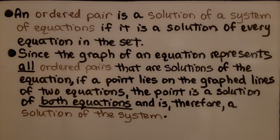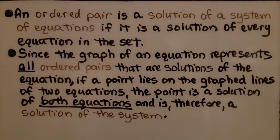Since the graph of an equation represents all ordered pairs that are solutions of the equation, if a point lies on the graphed lines of the two equations, the point is a solution of both equations and is therefore a solution of the system.